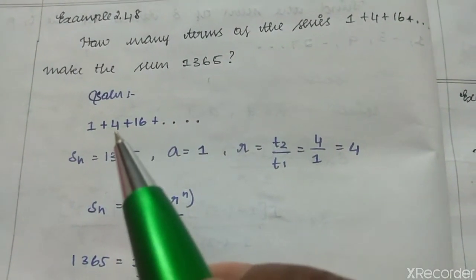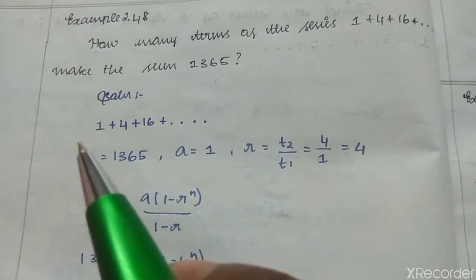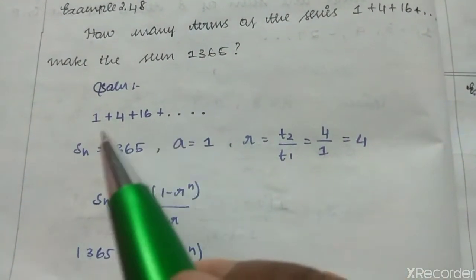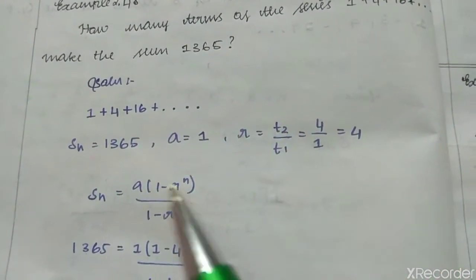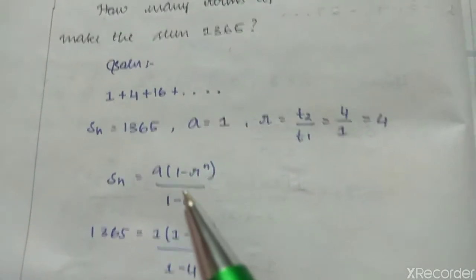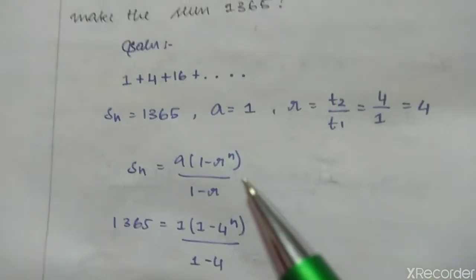Common ratio: t2 divided by t1, 4 divided by 1 or 16 divided by 4. So Sn equals a times 1 minus r to the power n divided by 1 minus r.